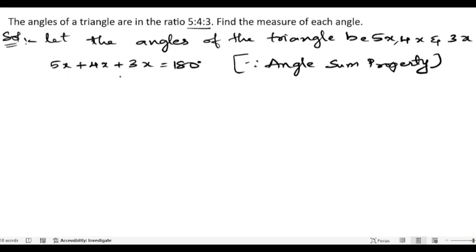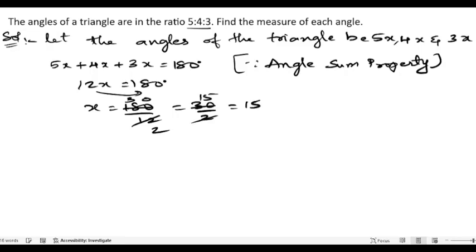So 5x plus 4x plus 3x is 12x equals 180 degrees. Now we will solve for x: x equals 180 by 12, which is 30 by 2, which equals 15. So the value of x is 15.